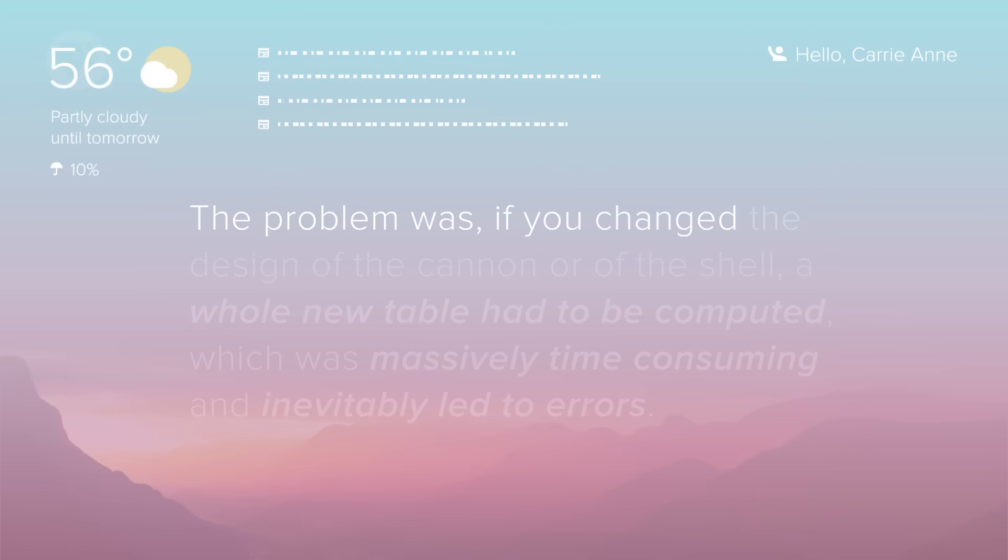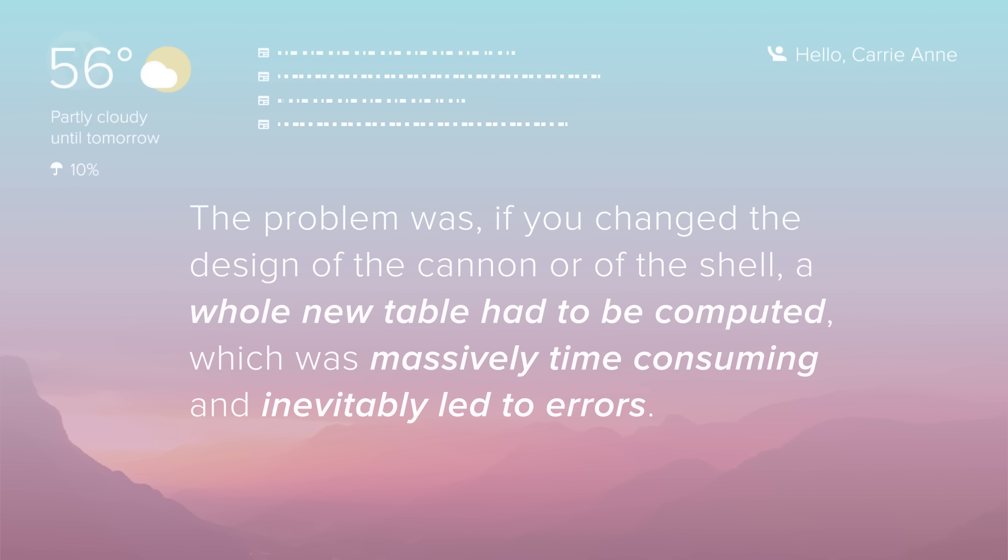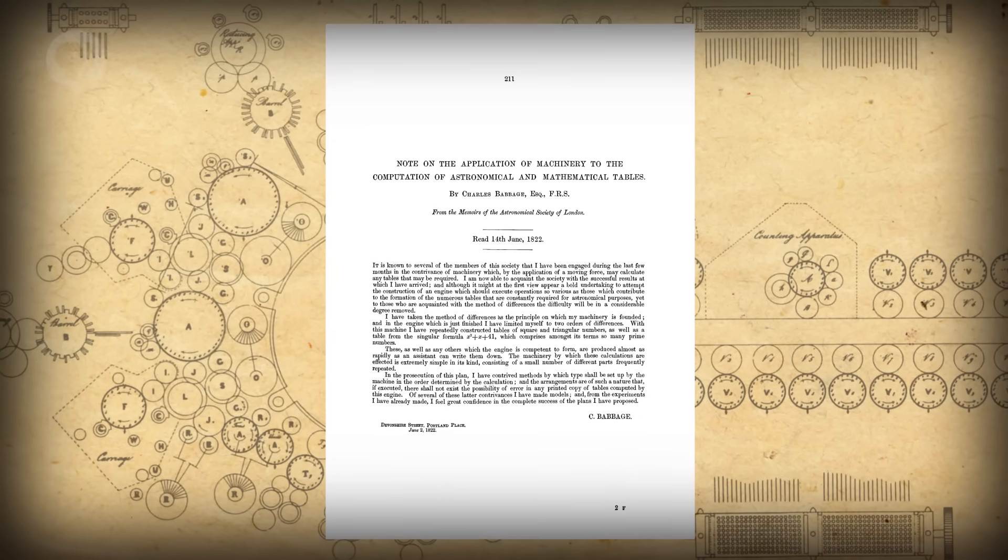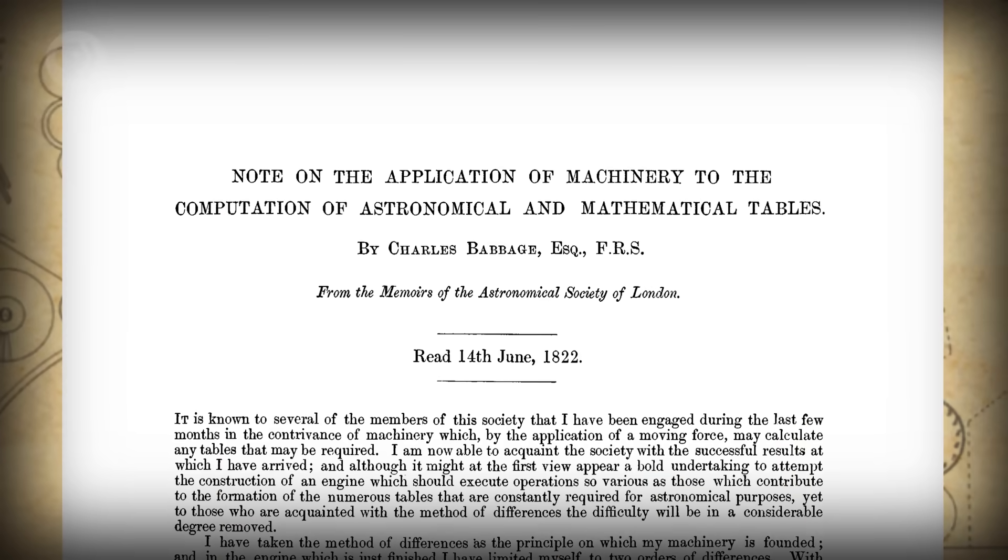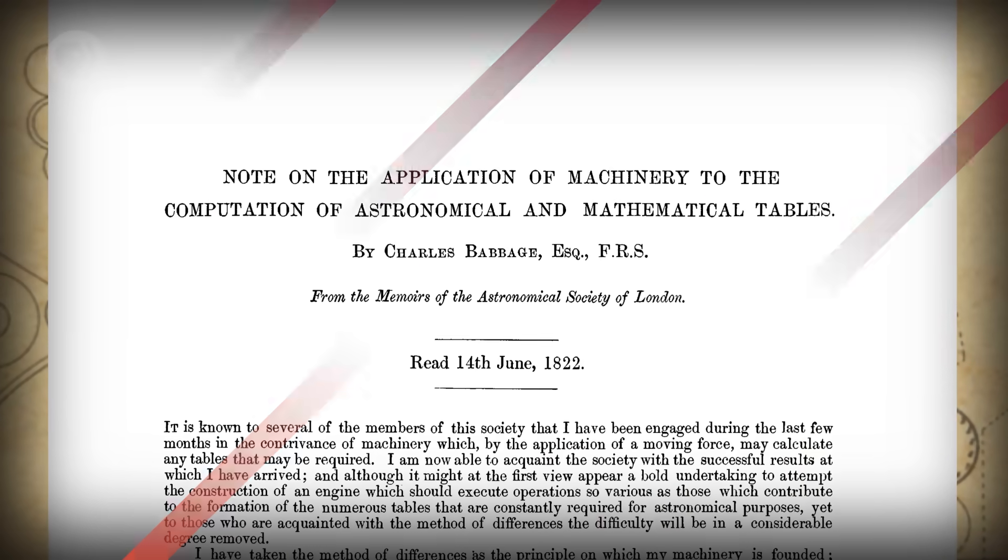The problem was, if you changed the design of the cannon or of the shell, a whole new table had to be computed, which was massively time-consuming and inevitably led to errors. Charles Babbage acknowledged this problem in 1822 in a paper to the Royal Astronomical Society entitled, Note on the Application of Machinery to the Computation of Astronomical and Mathematical Tables.